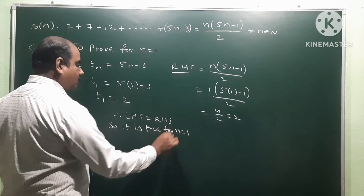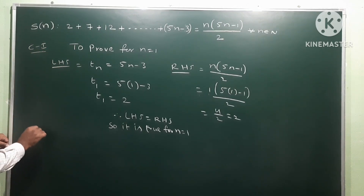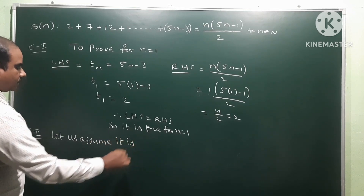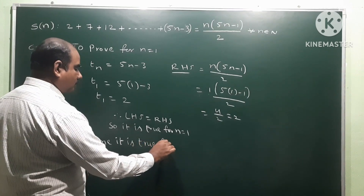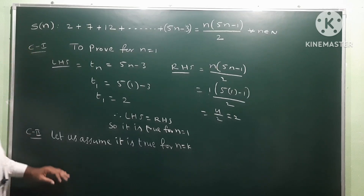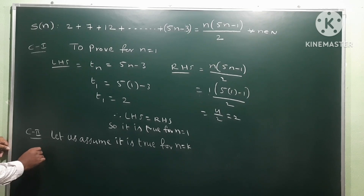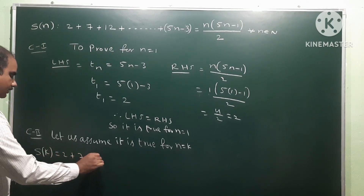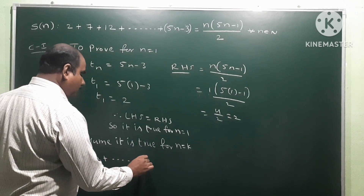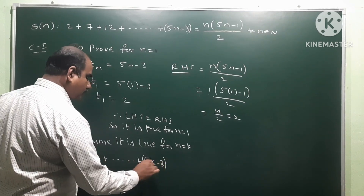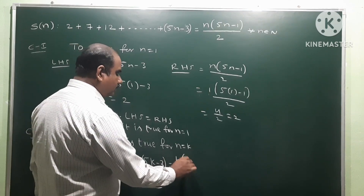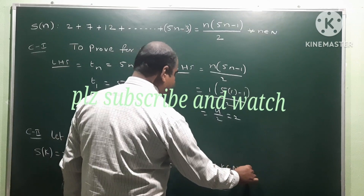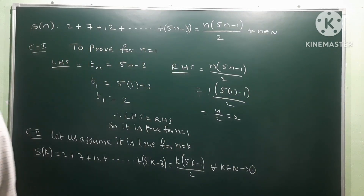Assume it is true for n equal to k. So S_k equals 2 plus 7 plus 12 plus and so on, where the kth term is 5k minus 3. This equals k into (5k minus 1) by 2, for all k belonging to N. Let us call this equation number 1, and this equals S of k.